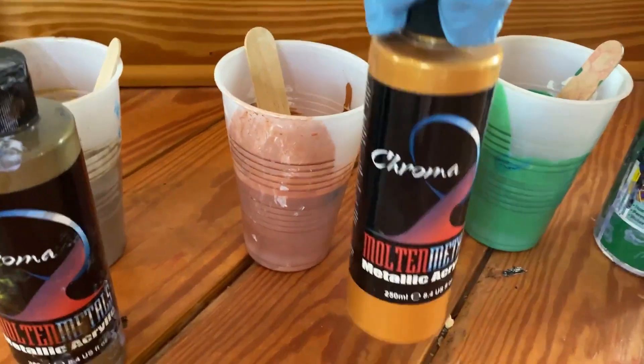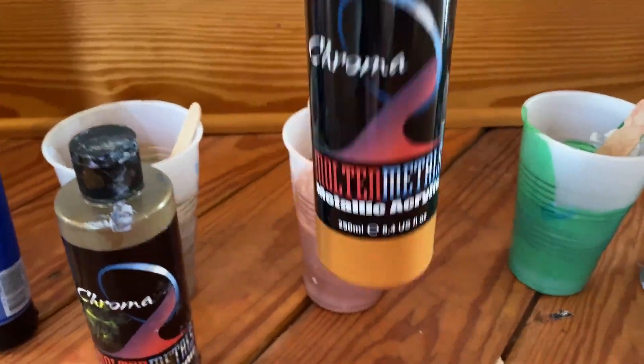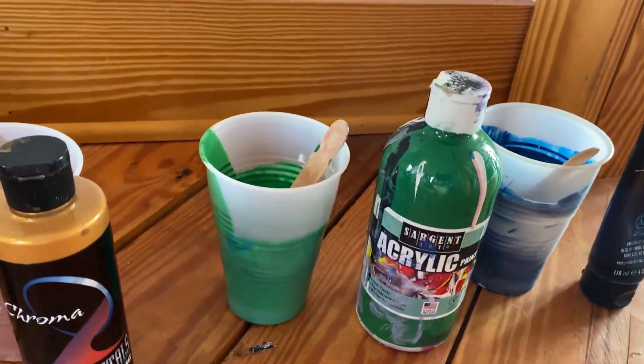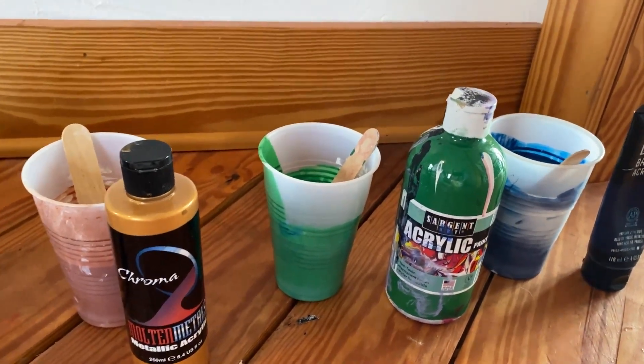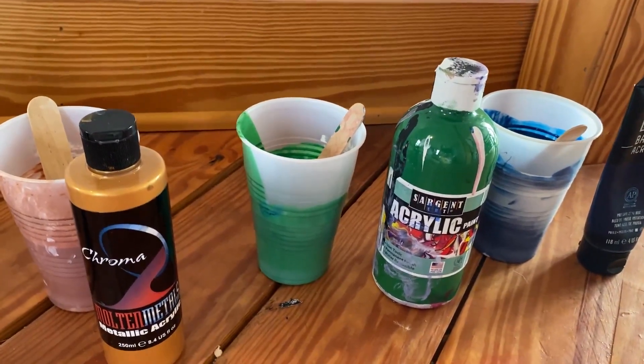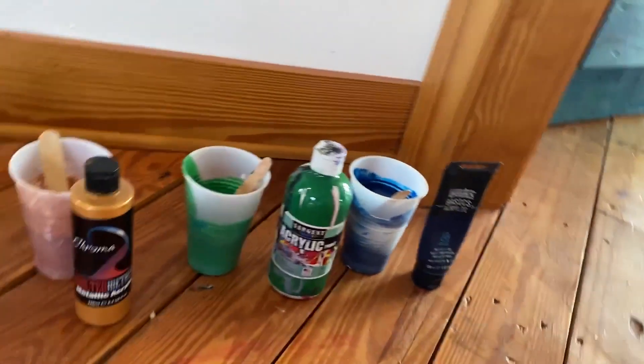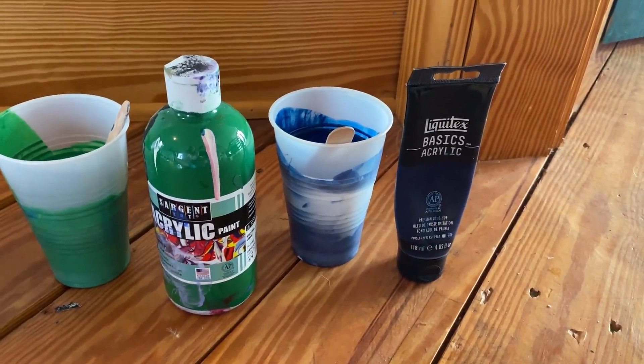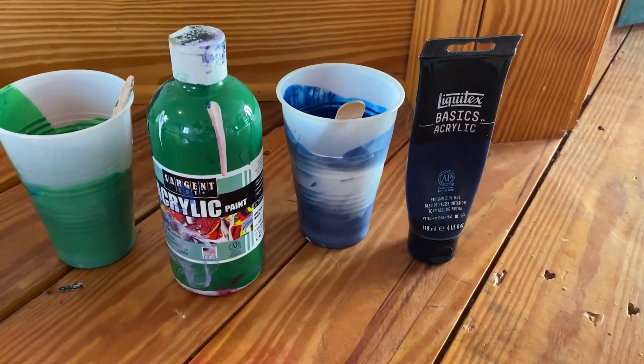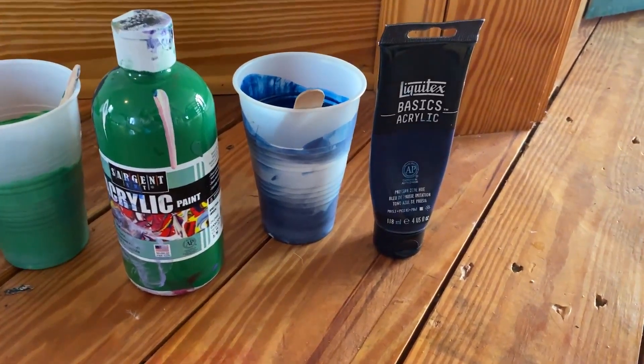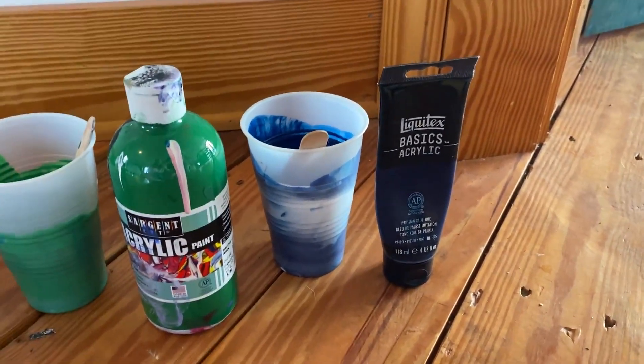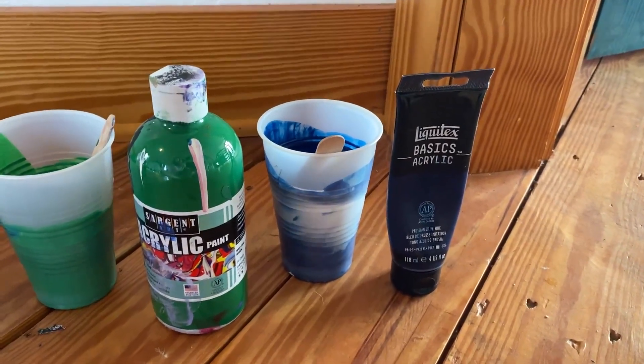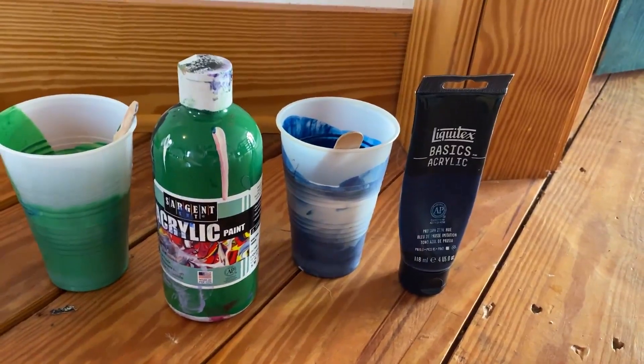Then I used Chroma Metallic Xanadu Gold. I used Sargent Green. If you're a beginner, I like Sargent colors. A lot of people don't, but I've had some cool stuff come out with Sargent when I use exclusively Sargent colors. And then I used a boatload ton of Liquitex Prussian Blue. Liquitex is probably one of the better brands, and I can see why, because it looks great every time I use it.